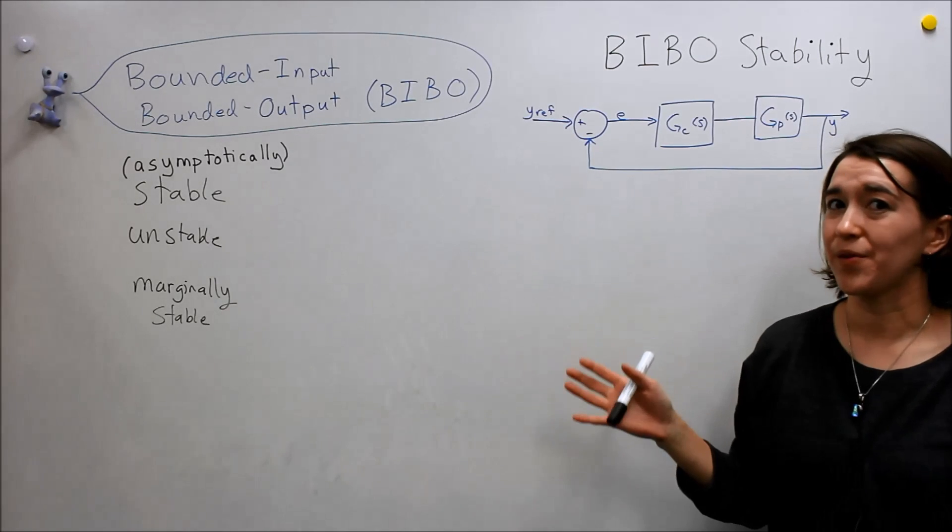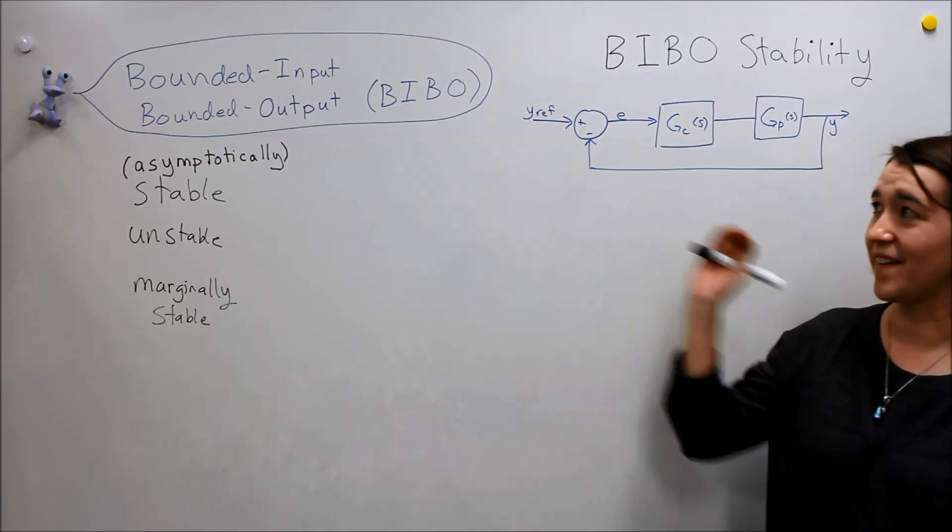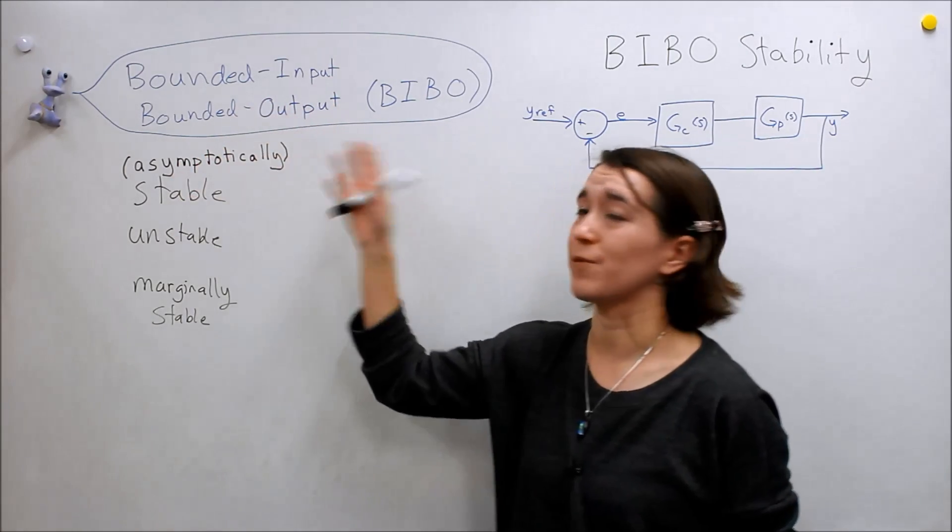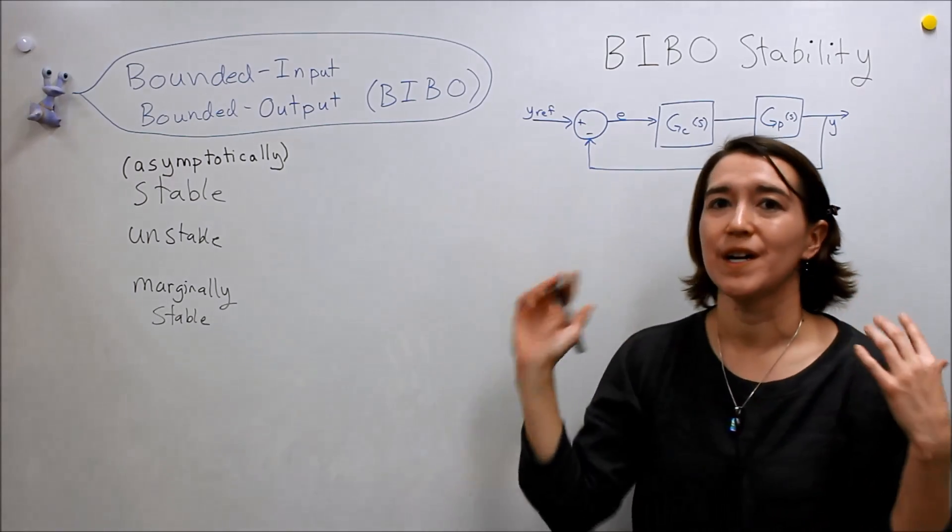So we're going to talk about another form of stability, and Valerie is saying it right now. We're going to talk about bounded input, bounded output. We also just call it BIBO stability.